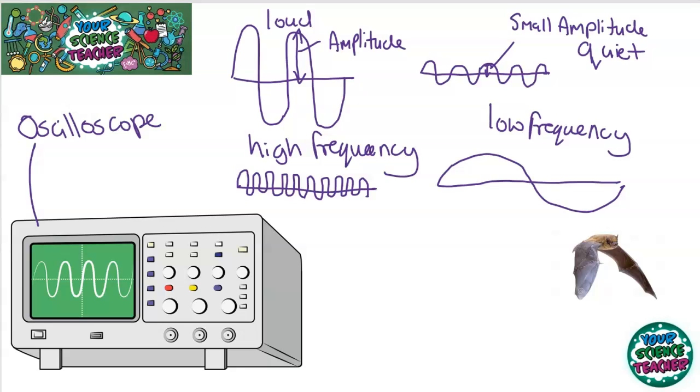Some animals can hear frequencies outside the human's hearing range. And an example is the bat. The bat produces really high frequency sounds, which it uses to detect its prey.